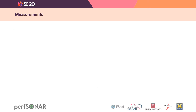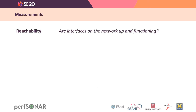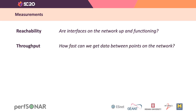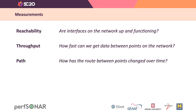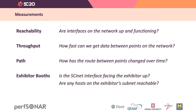On SCinet, we measure four things. First is reachability — we make sure that interfaces we expect to be up and functioning are. We measure throughput, how fast we can get data between points on the network and off the network. We watch routing path; even though SCinet is not a topologically complex network, it does have multiple routing options, and it's important to see how those paths change over time. Last year at SC19, we began monitoring the exhibitor booths as well — checking whether the SCinet interface facing the exhibitor was up and whether any hosts on the exhibitor's subnets were reachable.